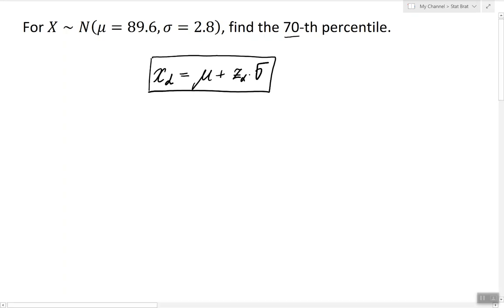We have to remember that finding the 70th percentile of any random variable is exactly the same as finding the x-alpha with alpha equals to 0.3.